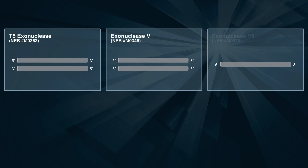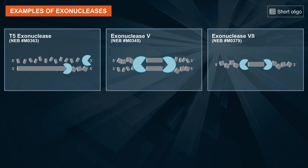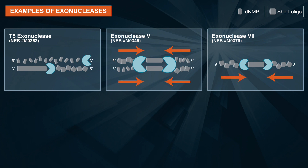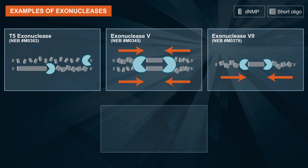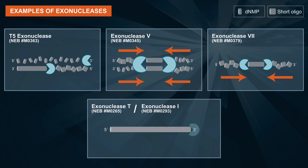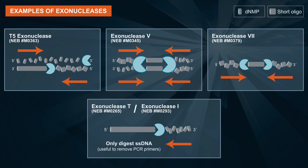Other exonucleases, such as T5 exo, Exo5, or Exo7, remove short oligos. The products of T5 exo and Exo5 digestion also include individual bases. Exonucleases such as Exo7 digest in both the five prime to three prime and the three prime to five prime direction, while others such as Exo1 only work in one direction. Some exonucleases such as Exo1 only digest single-stranded DNA while leaving behind double-stranded DNA, which can be useful to remove PCR primers, for example.